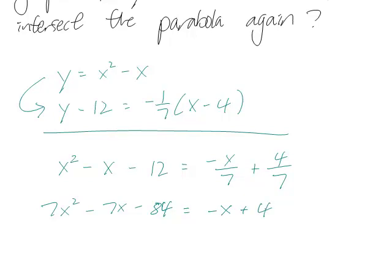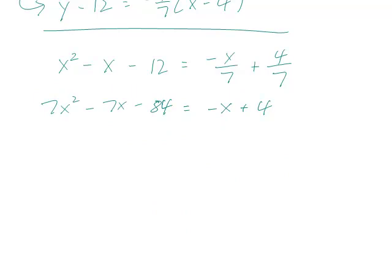Then if we bring everything to the left, we're going to get 7x squared minus 6x minus 88 equals 0.